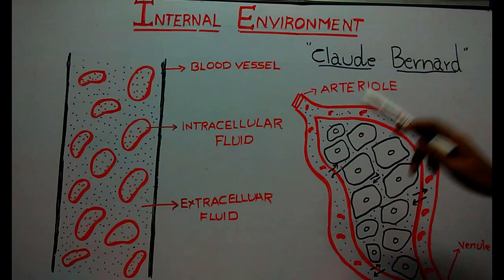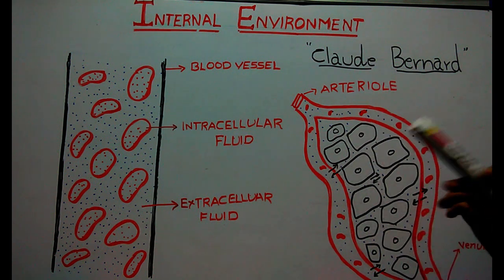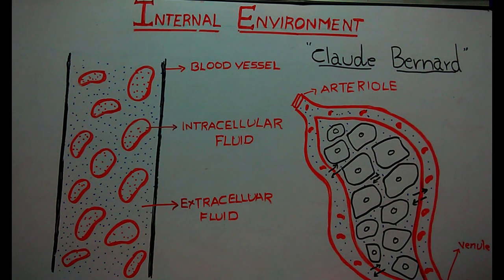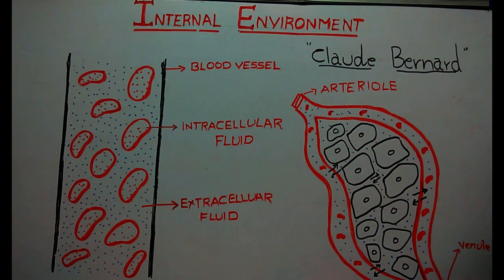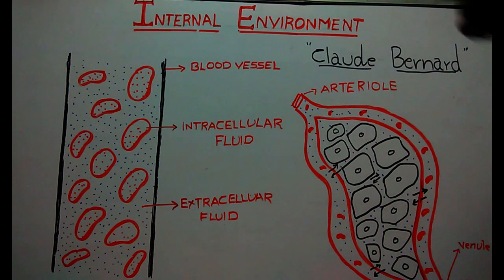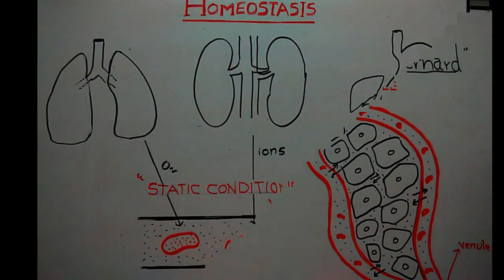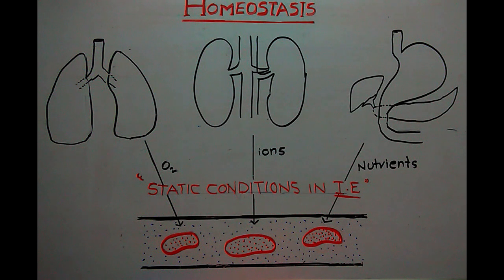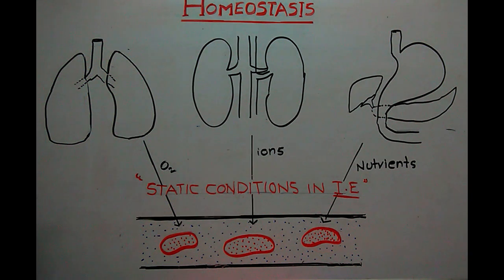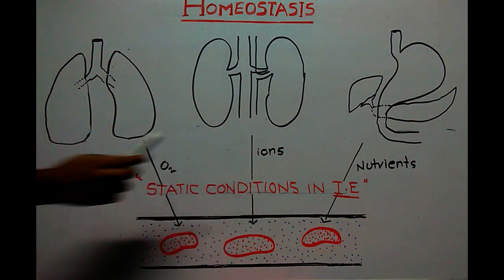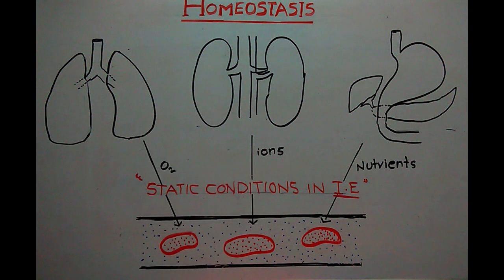From all this, it is evident that each and every cell of the body is surrounded by extracellular fluid. That means all the cells of our body live in the same environment, so it is called the internal environment. The internal environment is nothing but extracellular fluid. This term was coined by the great French physiologist of the 19th century, Claude Bernard.